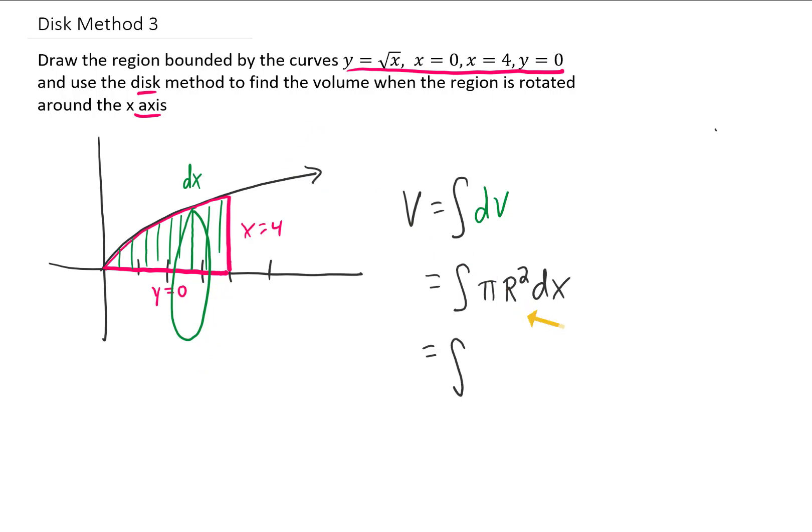So we're going to replace our r with this square root of x. We're also going to integrate this from the lowest x value in the region, which is 0, to the highest x value in the region, which is 4.